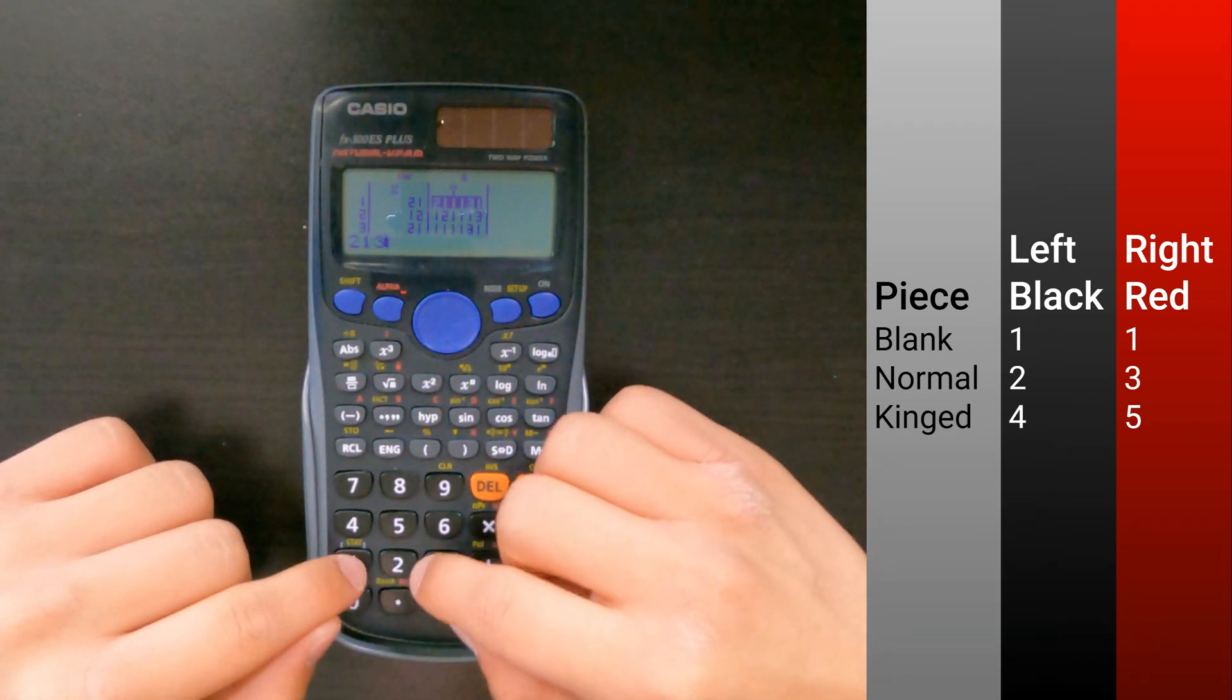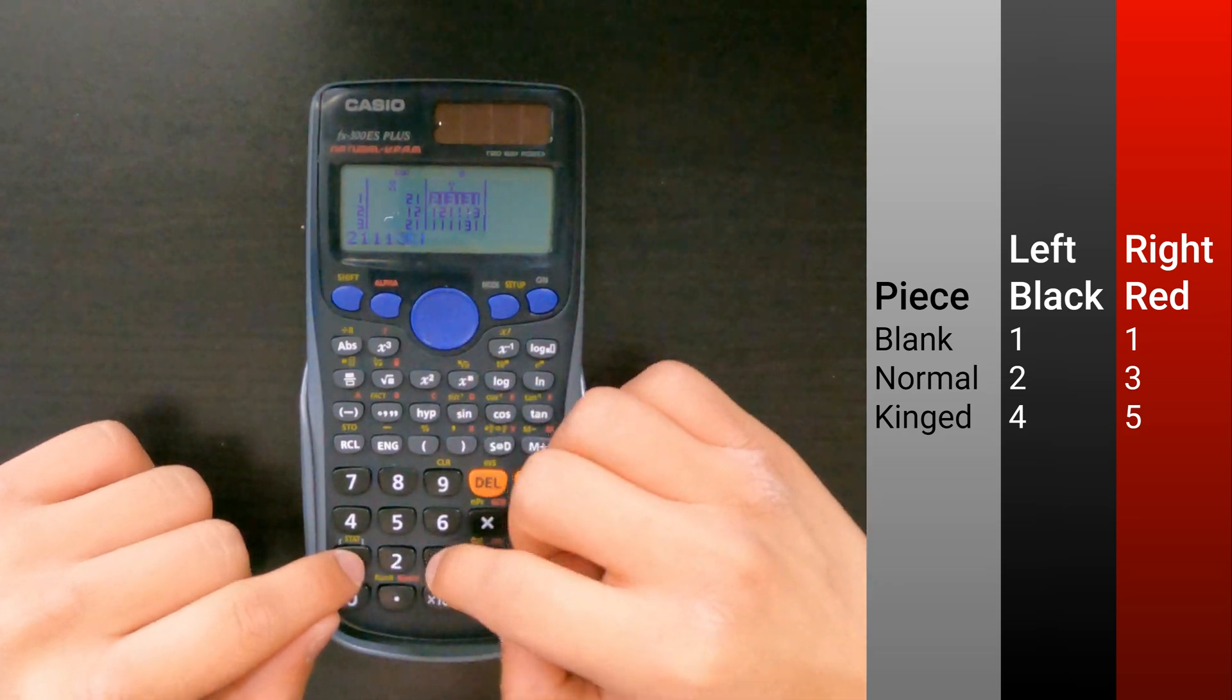To move, retype the piece numbers on the rows where your piece is from and where it is going to.